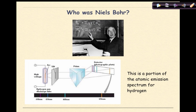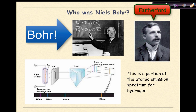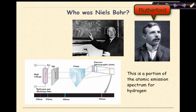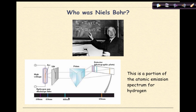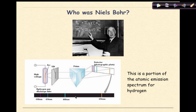So who was Niels Bohr? Niels Bohr basically took the work of Ernest Rutherford and expanded on the model of the atom. What he found was that when atoms of an element are exposed to energy, a unique line spectrum characteristic of that element is observed. This line spectrum is also known as spectral lines or atomic emission spectrum.